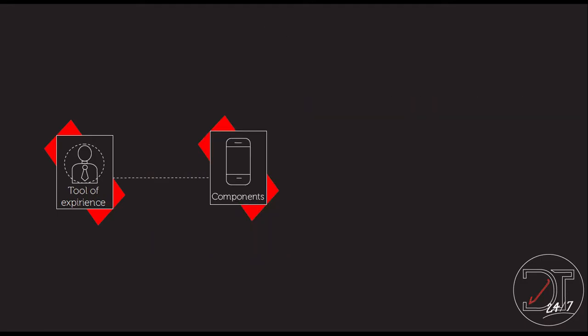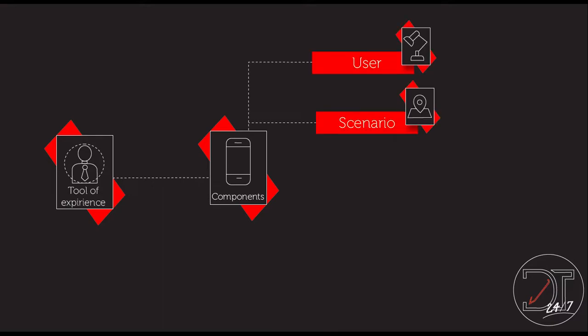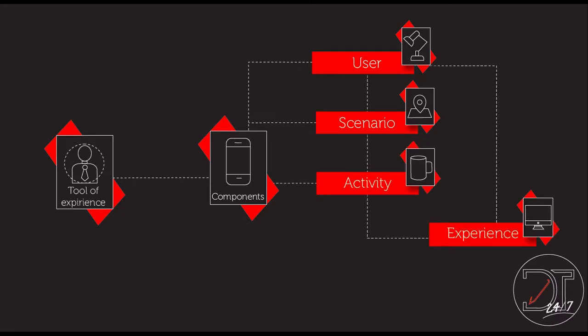The components of the user experience map are: user, scenario, activity, and experience.